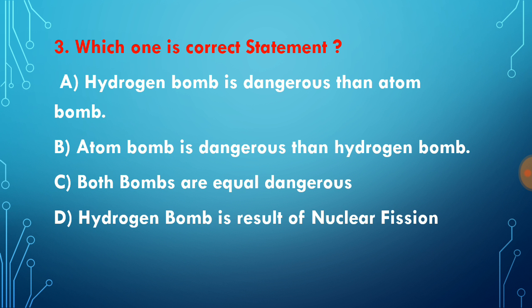Question number three is: which one is correct statement? Hydrogen bomb is dangerous than atomic bomb, atomic bomb is dangerous than hydrogen bomb, both bombs are equal dangerous, or hydrogen bomb is result of nuclear fission. The correct statement is the first one - hydrogen bomb is more dangerous than atomic bomb because a larger amount of energy is released from the hydrogen bomb.